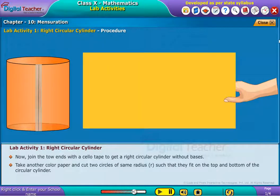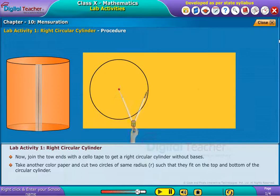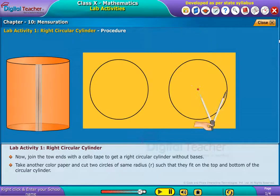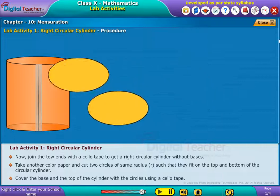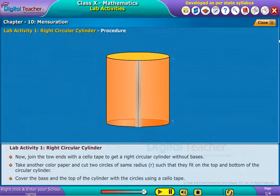Take another color paper and cut two circles of same radius R such that they fit on the top and bottom of the circular cylinder. Cover the base and the top of the cylinder with the circles using a cello tape.